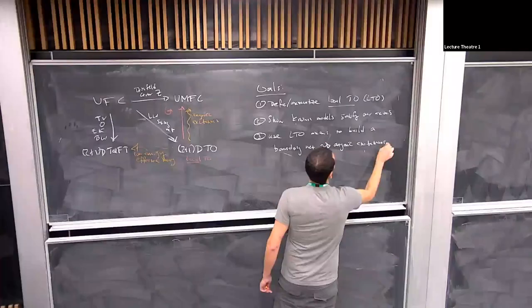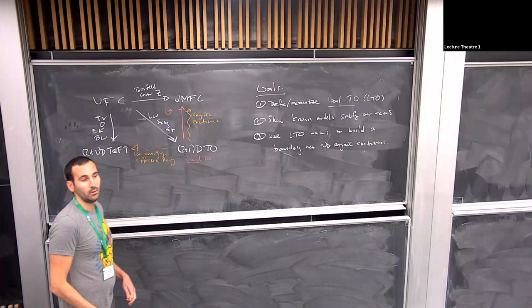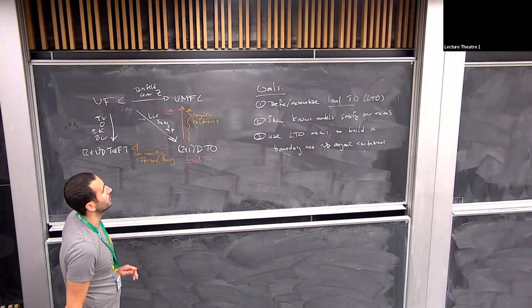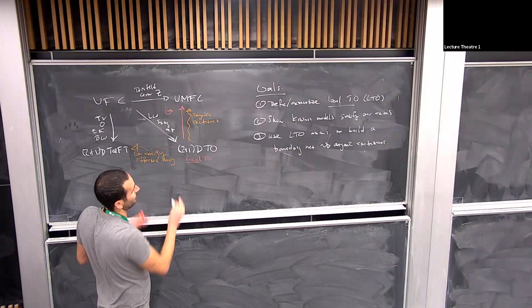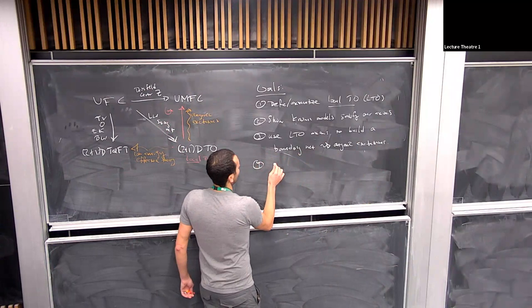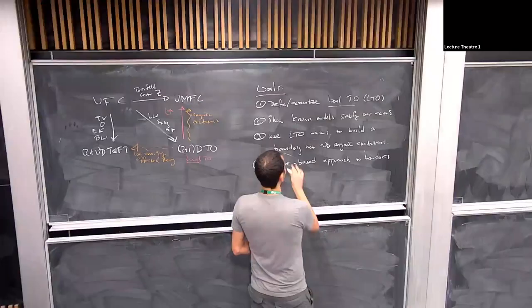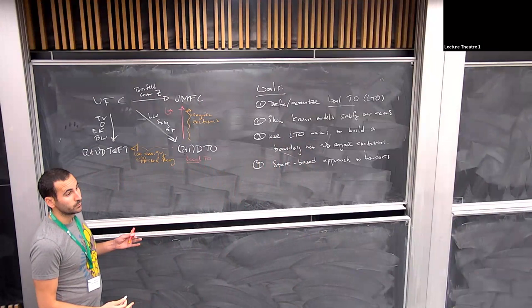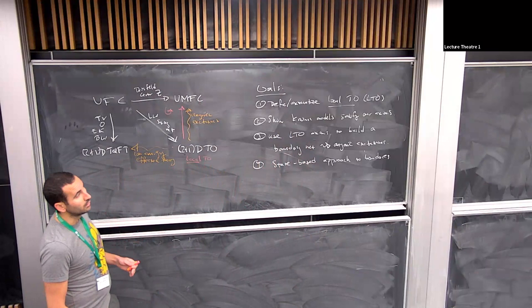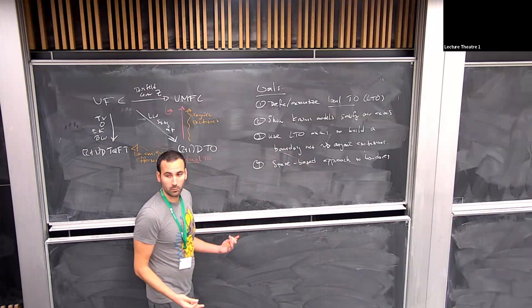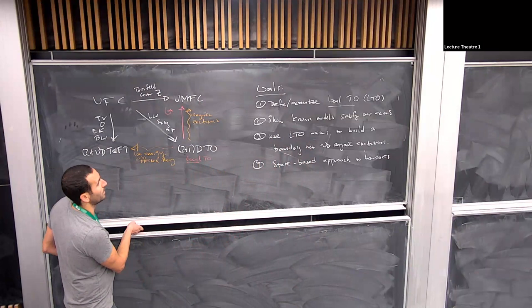Three, we're going to use the LTO axioms to build a boundary net, and that will give a description of the anyonic excitations in a rigorous way — recovering the braided fusion category, which will be modular for the cases we consider. Four, we'll present a state-based approach to boundaries, where states on this boundary net correspond to boundaries of the theory.